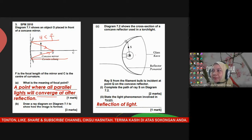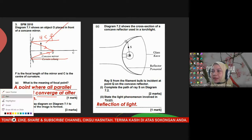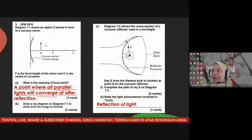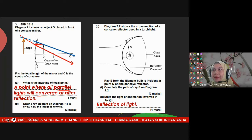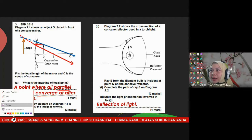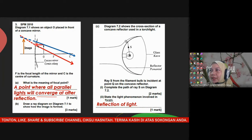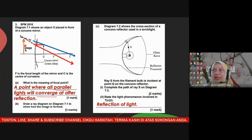Part B: draw the ray diagram to show how the image forms. The object is less than F, so apply Rule 1 and Rule 3. Rule 1: a line parallel to the principal axis reflects to F. Rule 3: a ray from the object to C reflects back along the same path. The image forms behind the mirror — label it as image.